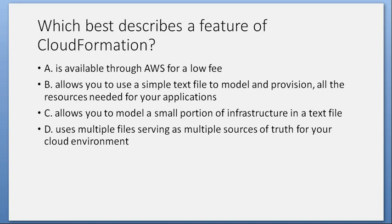Which best describes a feature of CloudFormation? A. Is available through AWS for a low fee. B. Allows you to use simple text files to model and provision all the resources needed for your application. C. Allows you to model a small portion of infrastructure in a text file. D. Uses multiple files serving as multiple sources of truth for your cloud environment. Answer: B. Allows you to use a simple text file to model and provision all the resources needed for your applications. Also, there is no fee for CloudFormation, it's a single file as a single source of truth, and it allows you to model the entire infrastructure — not just a small portion.